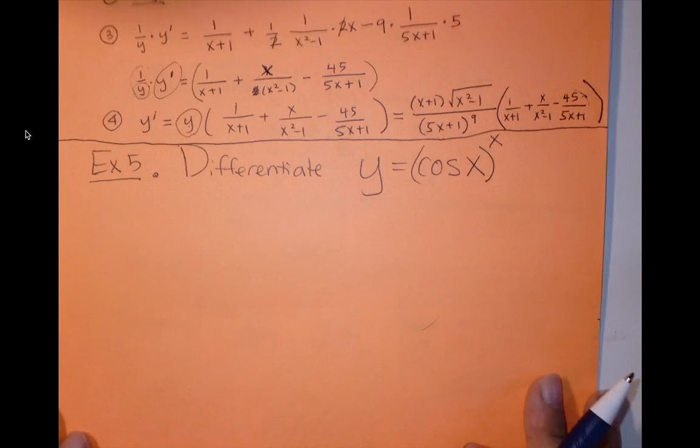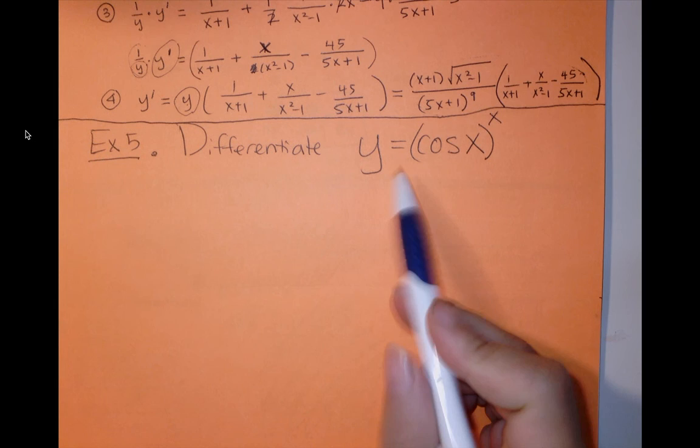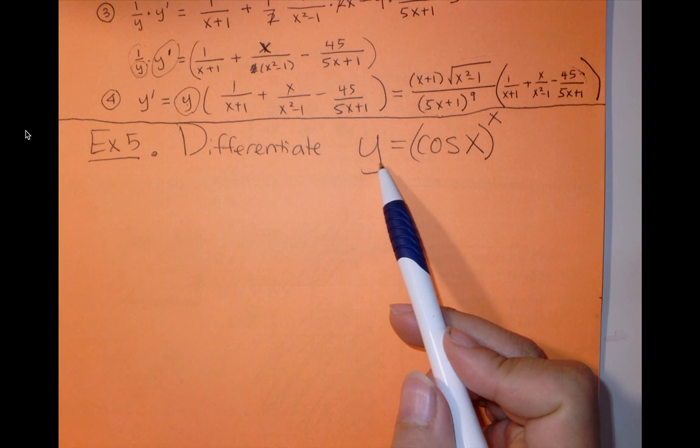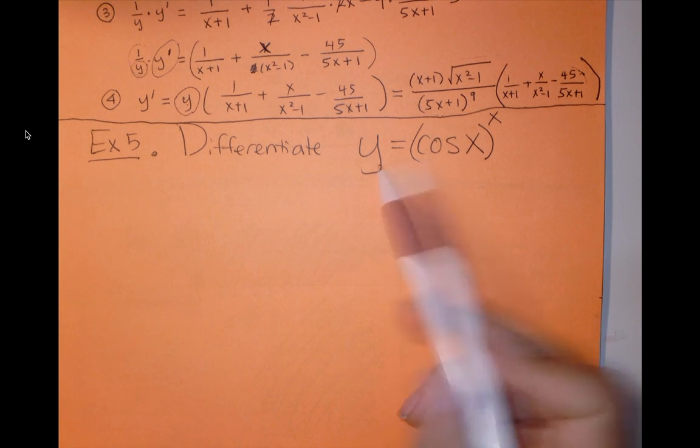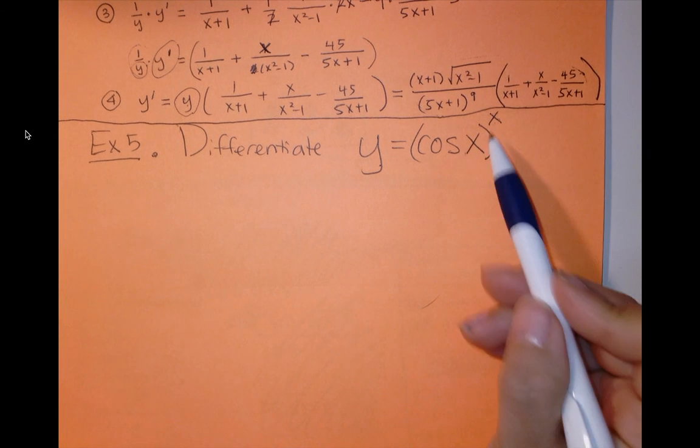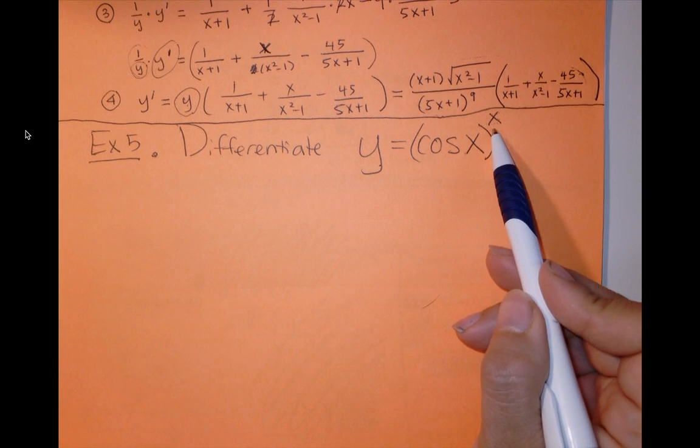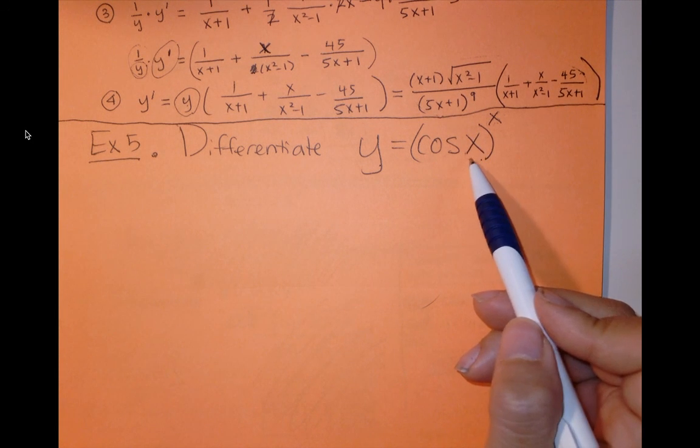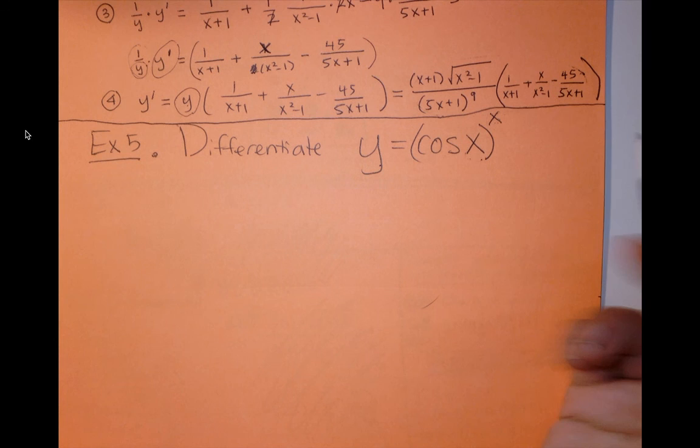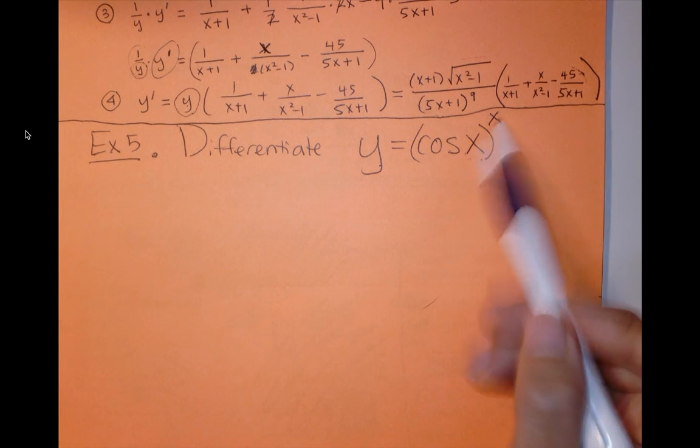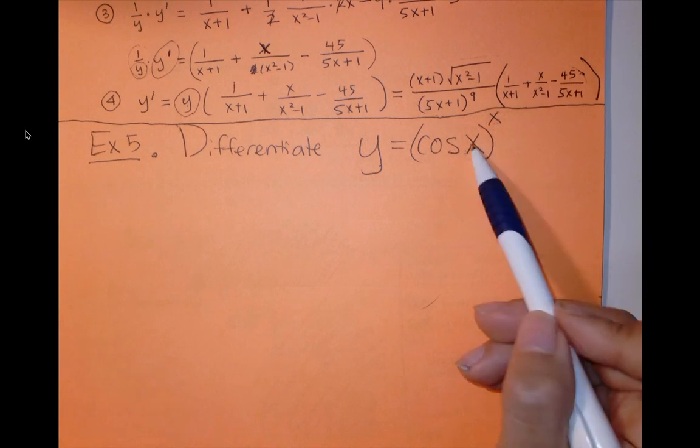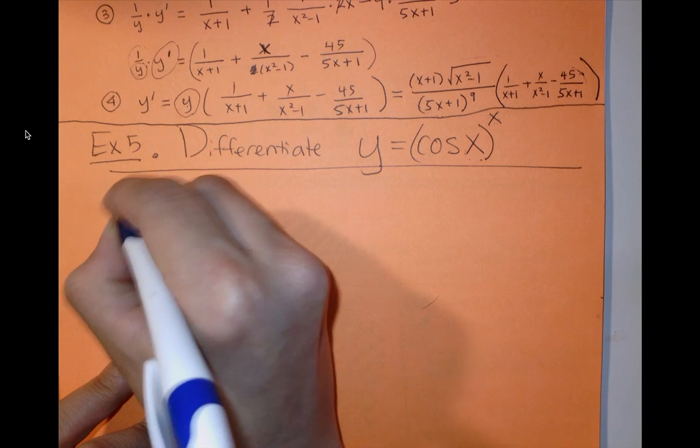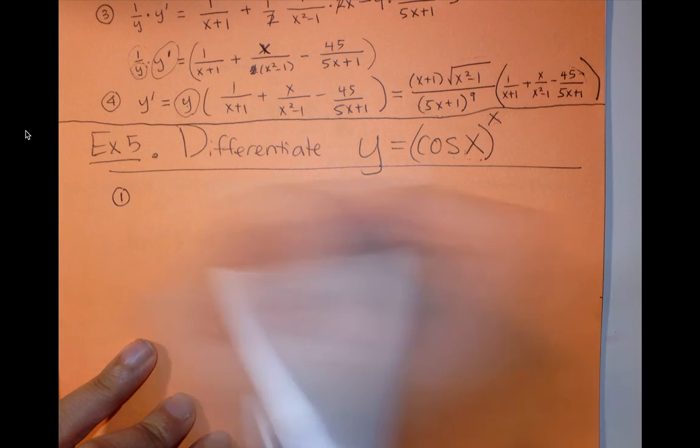The second example, this function, we don't really have any rules that would allow us to differentiate this function because the variable x is appearing in the exponent and it's also appearing in the base. So this is not composition of polynomial or exponential functions. We really don't have any rules that would allow us to differentiate this. But what we can do is we can try to use logarithmic differentiation.